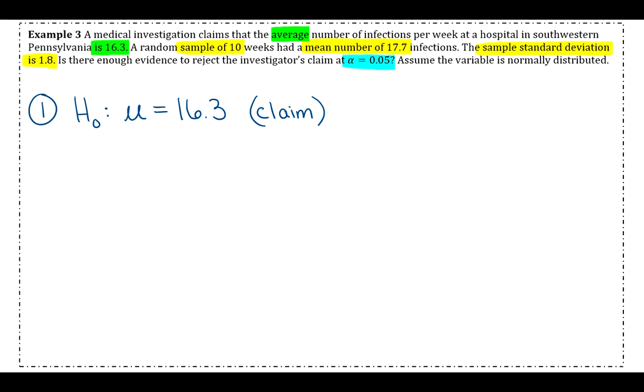And since the null hypothesis is the claim, that just means the alternative. We want to put the opposite, so we'll put not equal to 16.3 in the alternative. Okay, step two, we want to go ahead and get the p-value. So as far as distinguishing the difference between your last section and this section, again,